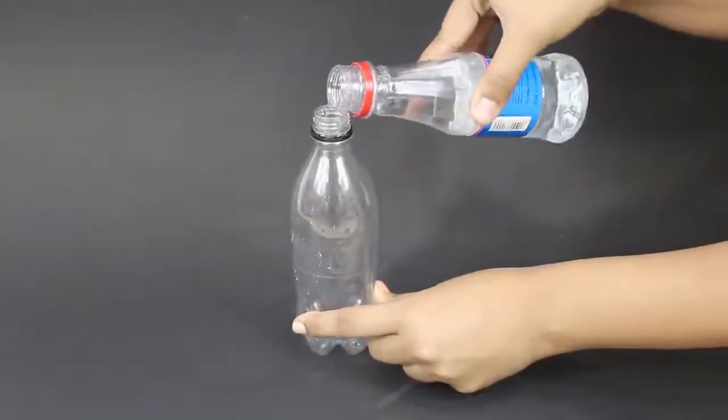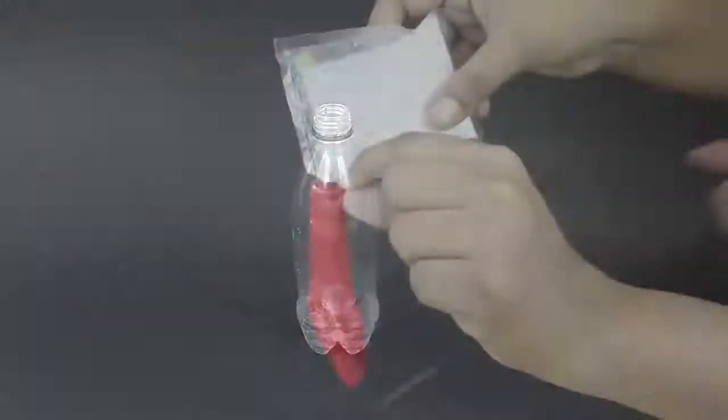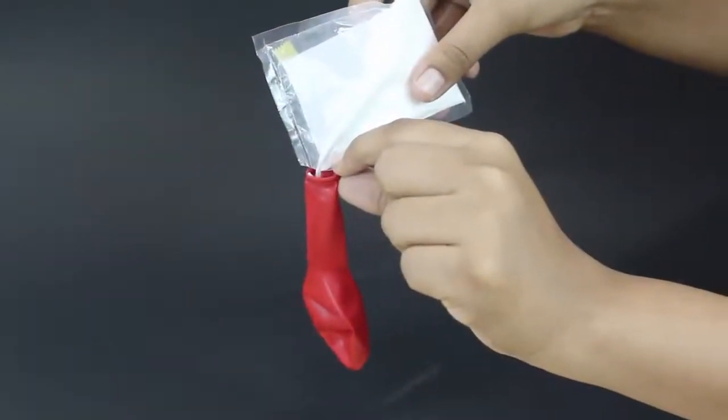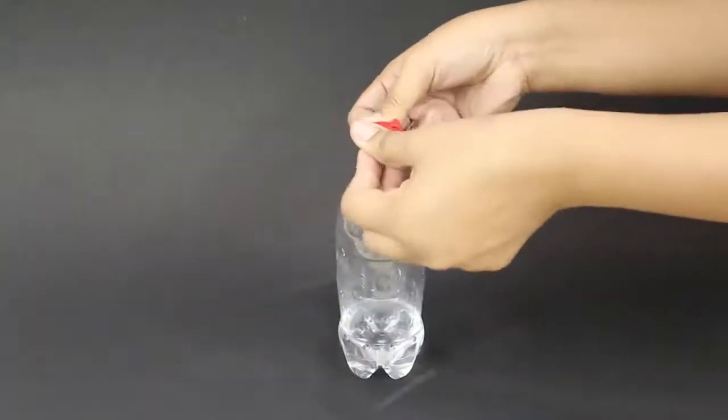Pour about 30 ml of vinegar in the plastic bottle. Fill about a tablespoonful of baking soda in the balloon. Now attach the balloon to the bottle as shown.